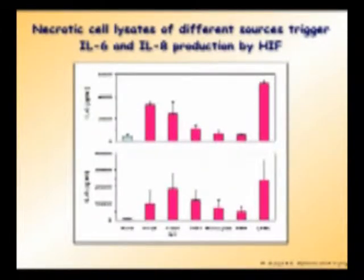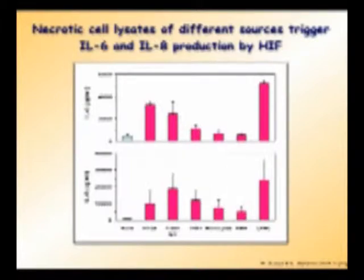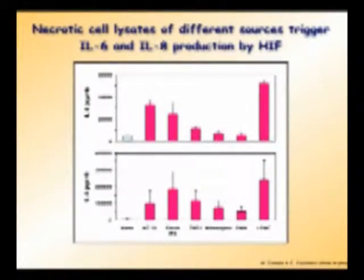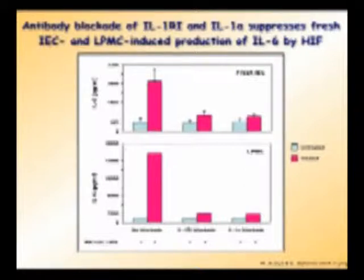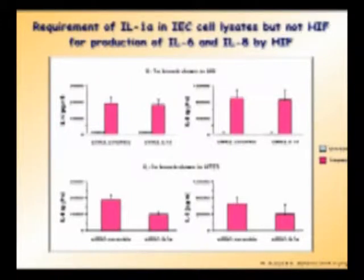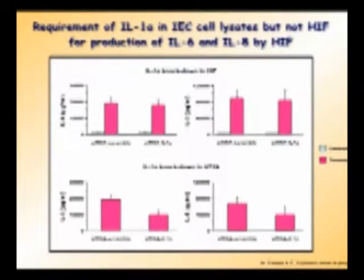That was from HT29, so we asked whether actual ex vivo human cells behave the same way. We compared HT29 to freshly isolated intestinal epithelial cells, THP1 monocytic cells, monocytes, polymorphonuclear leukocytes, and lamina propria mononuclear cells. All of them produced the same result. Since IL-1α is present in all cells of the body, disruption by necrosis liberates IL-1α. We then did specific blockade of IL-1α and again eliminated the response.